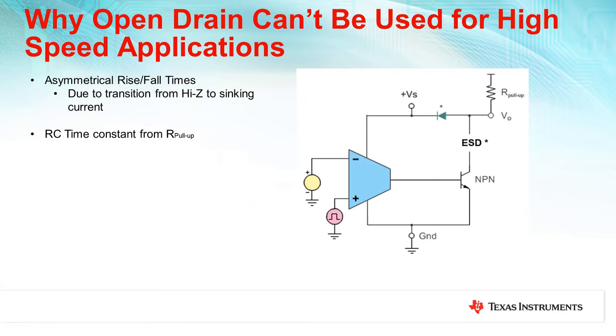For certain applications that require data throughput in the gigabit per second range, the speed at which an open drain or push-pull output responds at can be too slow. The reason why open drain outputs can be too slow for high speed applications is due to the imbalance in rise and fall times due to the output transistor transitioning from a high Z state to actively sinking current, as well as the RC time constant from the pull-up resistor that slows down the edges of the comparator output.